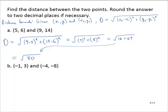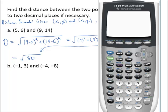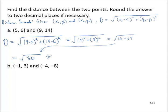Now using a calculator, the square root of 80 is 8.94 approximately. So the distance between those two points is approximately 8.94 units.